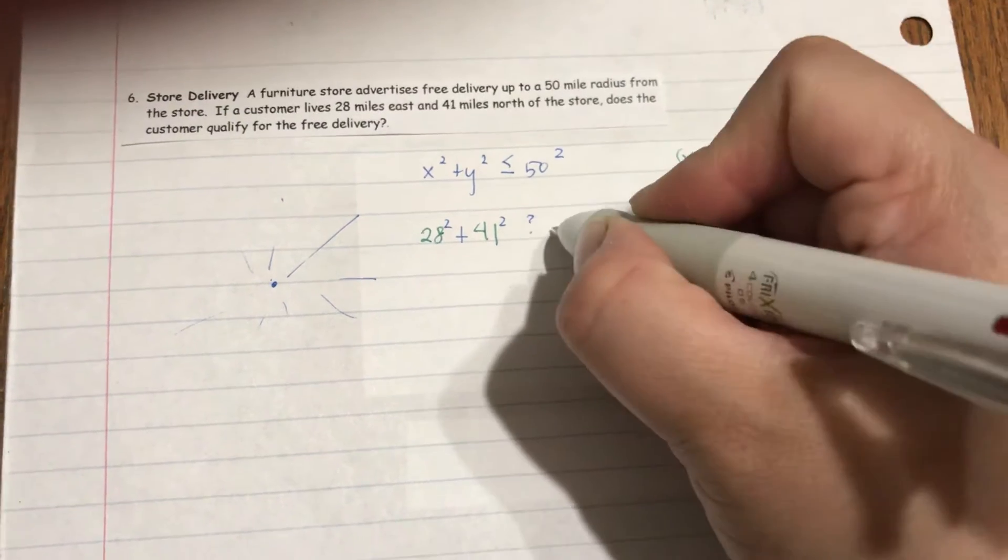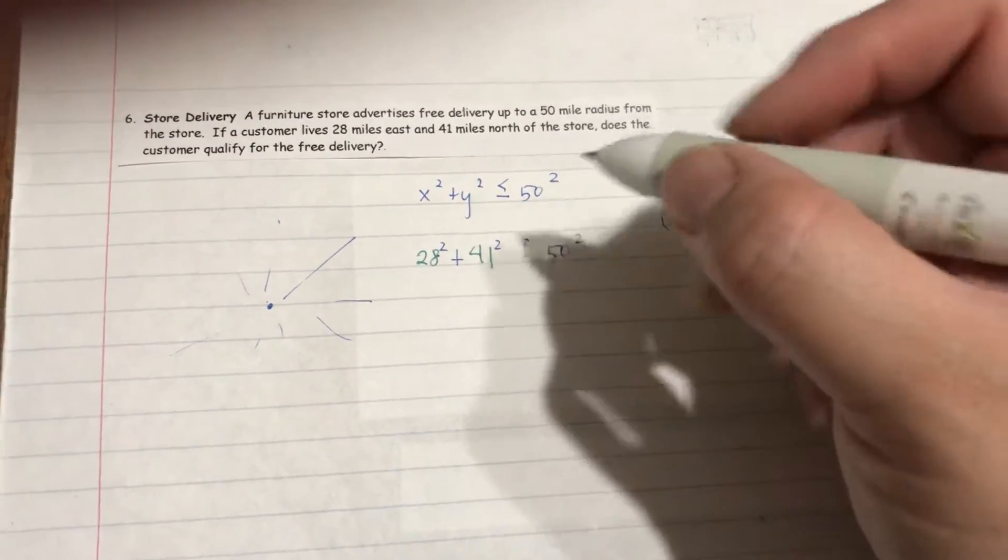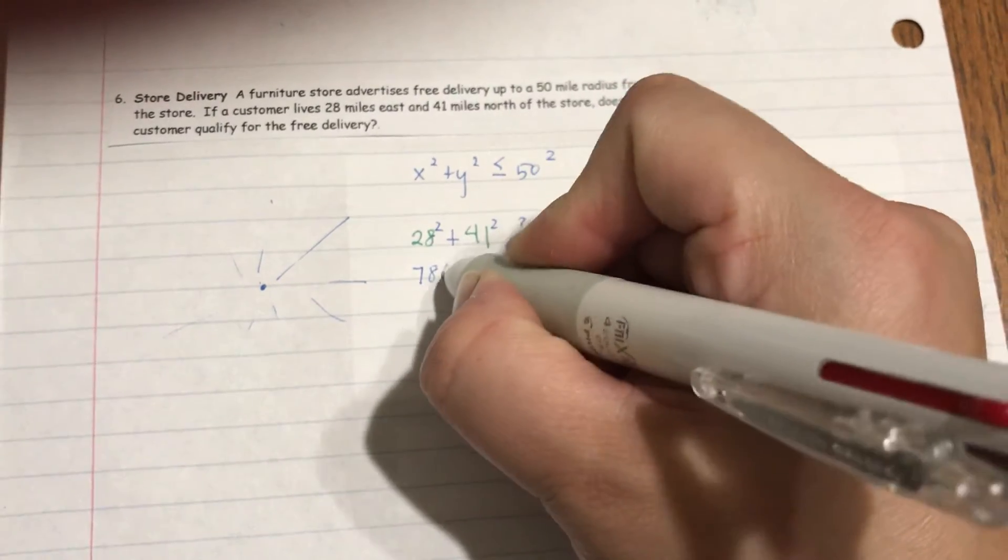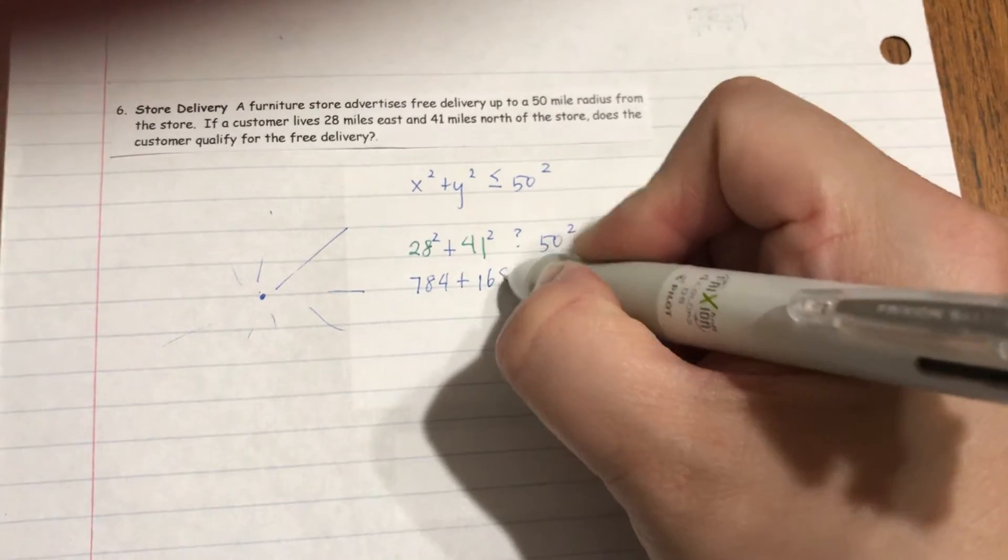So is it really less than 50 squared? We're going to check that out. 28 squared, using a calculator, is 784 plus 41 squared, that's 1681.